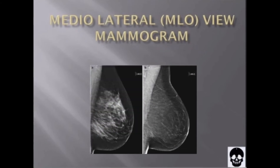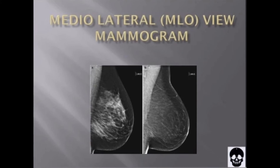Always remember in mammogram, we have 5P: proper planning and preparation leads to perfect positioning. In the Mediolateral oblique mammogram, we have the initial setup. Reduce the height of the IR slightly from the CC view and angle the tube head to 50 degrees, but it depends on the body habitus of the patient. Later on, we will discuss about the angulation of the tube.